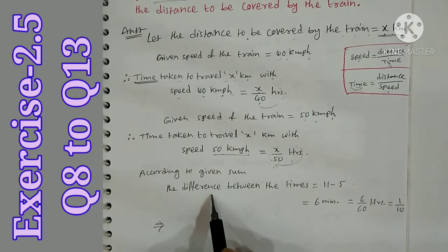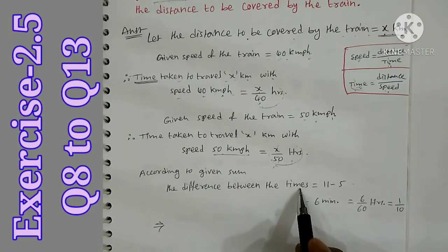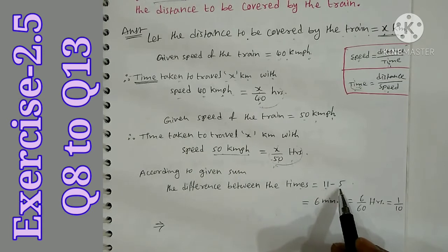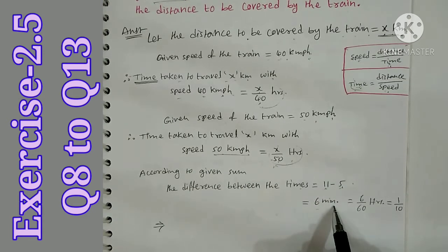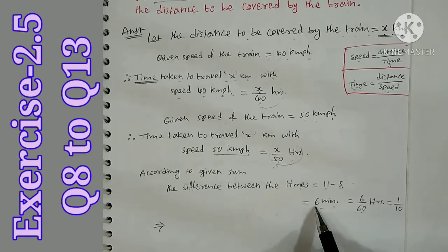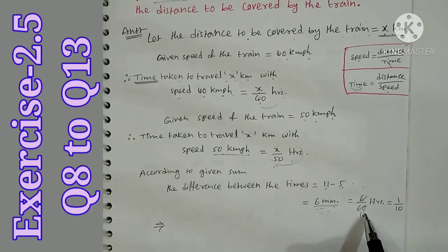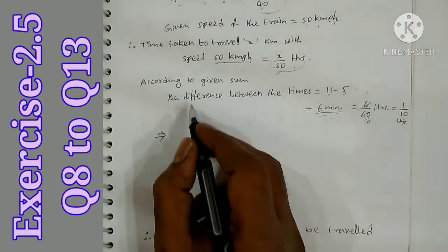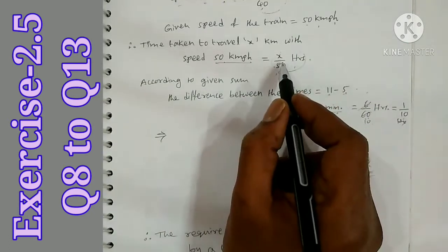According to the given sum, the difference between the two times: at the first speed the train is 11 minutes late, at the second speed it is 5 minutes earlier. The difference is 6 minutes, which equals 1 by 10 hours.